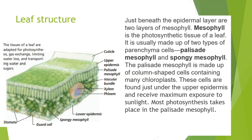Just beneath the epidermal layer are two layers of mesophyll. Mesophyll is the photosynthetic tissue of a leaf, usually made up of two types of parenchyma cells. Palisade mesophyll, seen in the upper part of the illustration, and spongy mesophyll, shown in the lower part. The palisade mesophyll is made up of column-shaped cells containing many chloroplasts. These cells are found just under the upper epidermis and receive maximum exposure to sunlight. Most photosynthesis takes place in the palisade mesophyll.